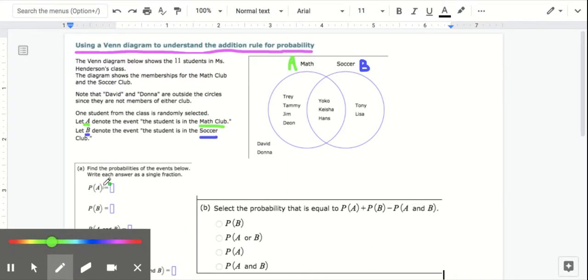So the probability of A means the probability they're in the math club, which means that they're in this circle right here. So how many students are in the math club? Well 1, 2, 3, 4, 5, 6, 7. 7 out of 11, the total students. So the probability of A is 7 elevenths.